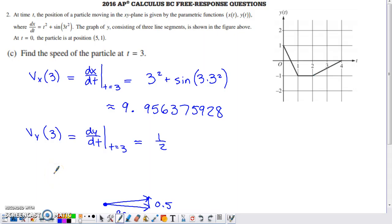Part C asks us to find the speed of the particle at time 3. Speed is simply the magnitude of the resultant velocity vector. If you find the x component of velocity at 3, that's simple. It's basically what we did in that denominator of the last piece. Evaluate for the x component of velocity at 3 and you get 9.956.